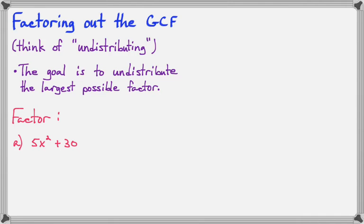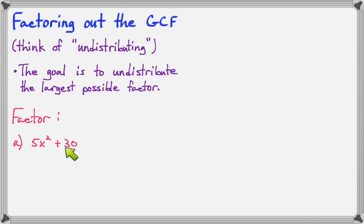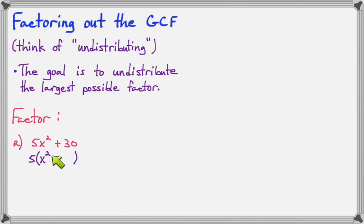Let's look at an example. I've got 5x squared plus 30. Notice that both of these numbers are multiples of 5, so it looks like a 5 has been distributed through here. I could undistribute that 5, and that would mean I would need two terms inside a pair of parentheses. So 5 times something would have to make x squared.